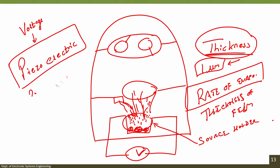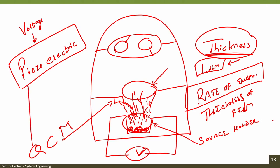The quartz crystal monitor inside the vacuum chamber measures the rate of deposition. The parameter — change in voltage versus deposition rate — is pre-fed into the electronics. Once the desired deposition rate is known (typically given in angstroms per second), you can open the shield and let material deposit onto the substrate.